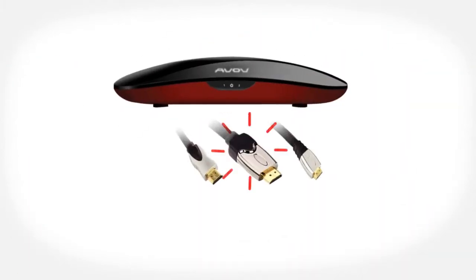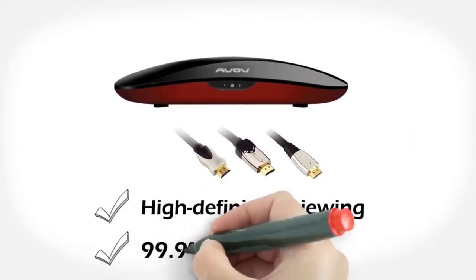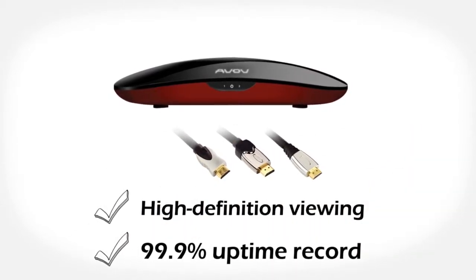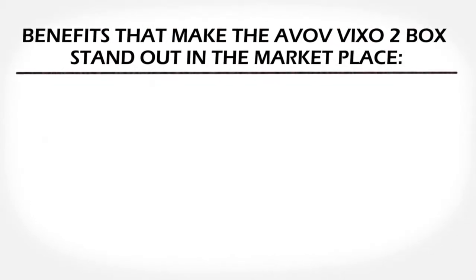The Evov Vixo 2 box also comes with gold-plated HDMI cables for high-definition viewing and has a 99.9% uptime record. Here are just some of the benefits that make the Evov Vixo 2 box stand out in the marketplace.